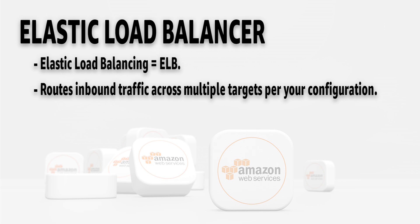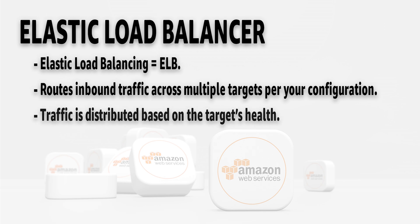The traffic is distributed based on the target's health, so that all incoming traffic is directed to a healthy instance. If one of your EC2 instances fails or gets marked as unhealthy, then your ELB will automatically route all incoming traffic to the remaining healthy EC2 instances. If the EC2 instance is restored and healthy again, then the ELB will restore incoming traffic to that instance.